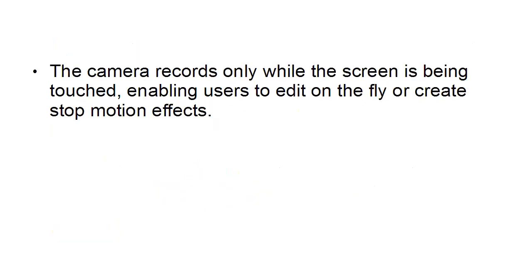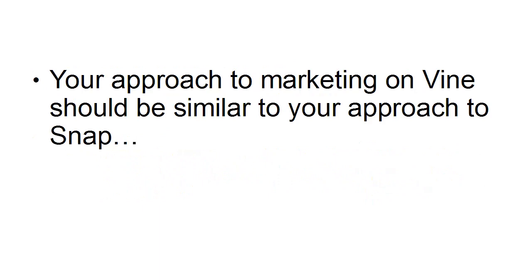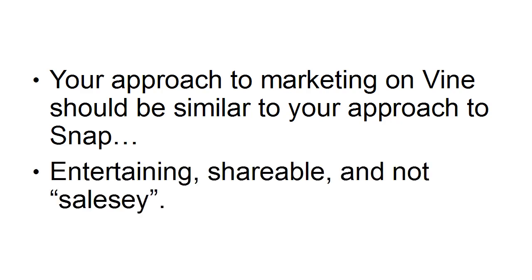When you're using Vine, the camera only records while the screen is being touched, and this enables users to edit on the fly or create stop-motion effects. Additional features were added to the app in July 2013, including grid and ghost image tools for the camera, curated channels with themed areas and trending topics or users, protected posts, and the ability to re-Vine videos on a personal stream. Your approach to marketing on Vine and Periscope should be similar to your approach to Snap: entertaining, shareable, and not salesy.